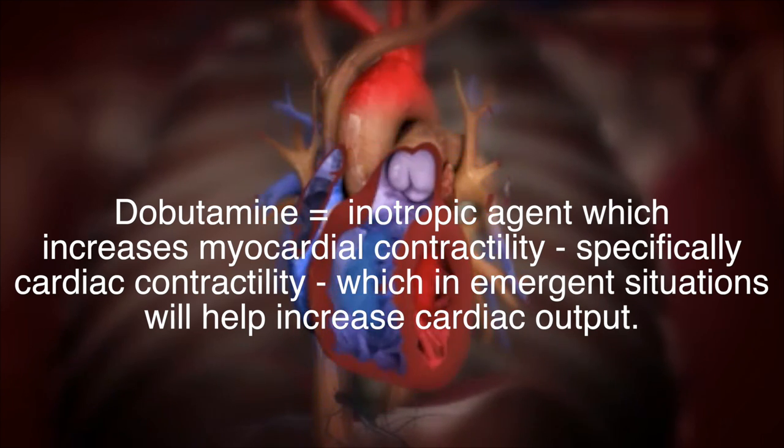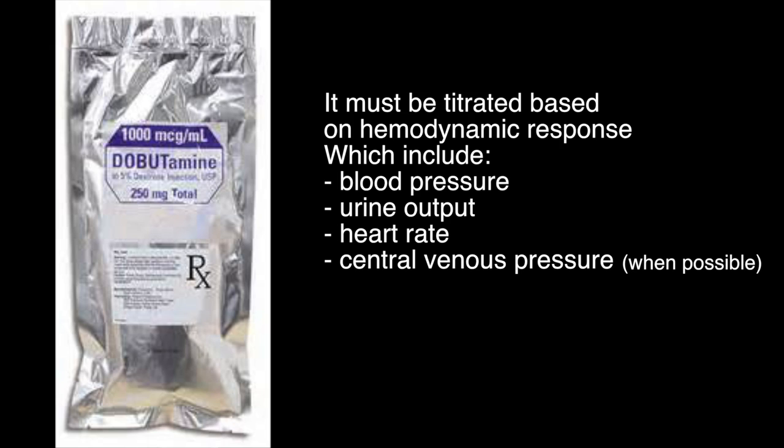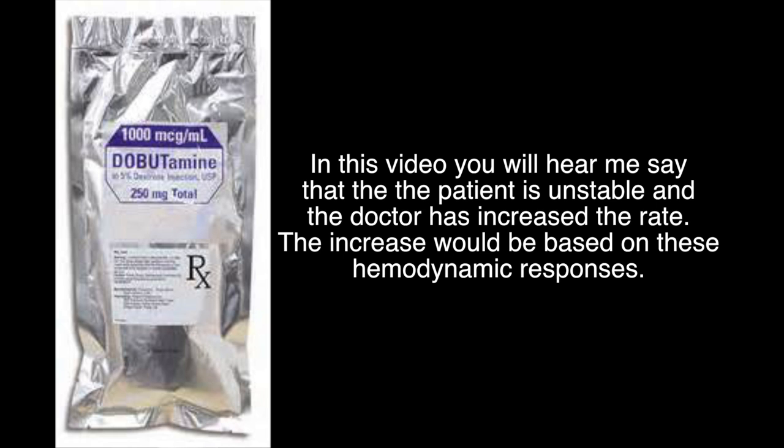which in emergent situations will help increase the cardiac output. It must be titrated based on hemodynamic responses, which include blood pressure, urine output measurement, heart rate, and whenever possible, central venous pressure. In this video, you will hear me say that the patient is unstable and that the doctor has increased the rate. This increase will be based on these hemodynamic responses.